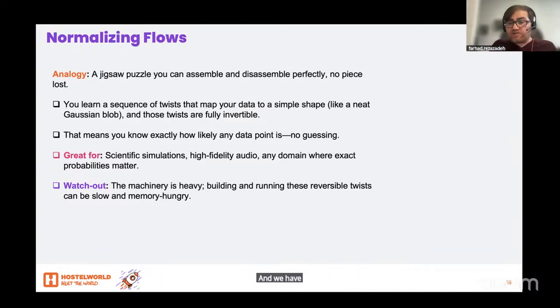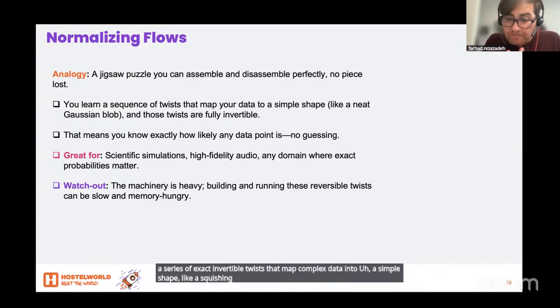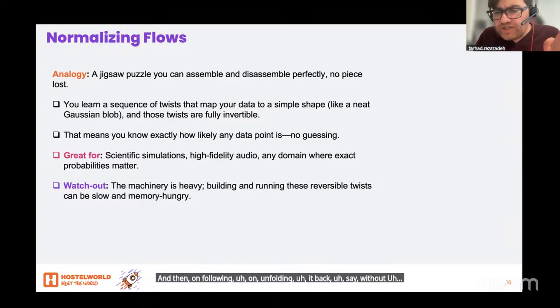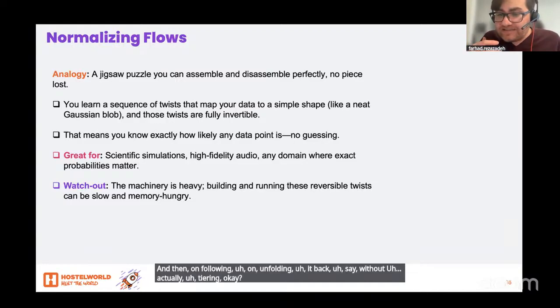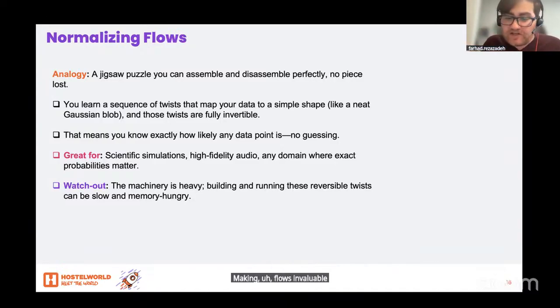And we have the flows that promise perfect reversibility. They learn a series of exact invertible twists that map complex data into a simple shape, like squashing a crumpled piece of paper into a neat rectangle and then unfolding it back, without actually tearing.